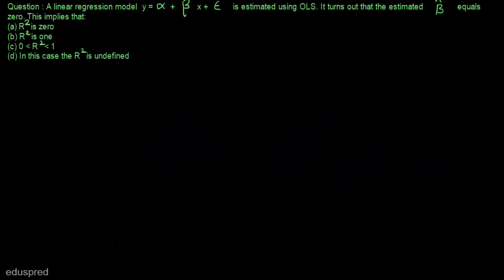In this video I am going to solve this question. A linear regression model y = alpha + beta*x + epsilon is estimated using OLS. It turns out that the estimated beta hat equals zero, and we have to check what does it imply.